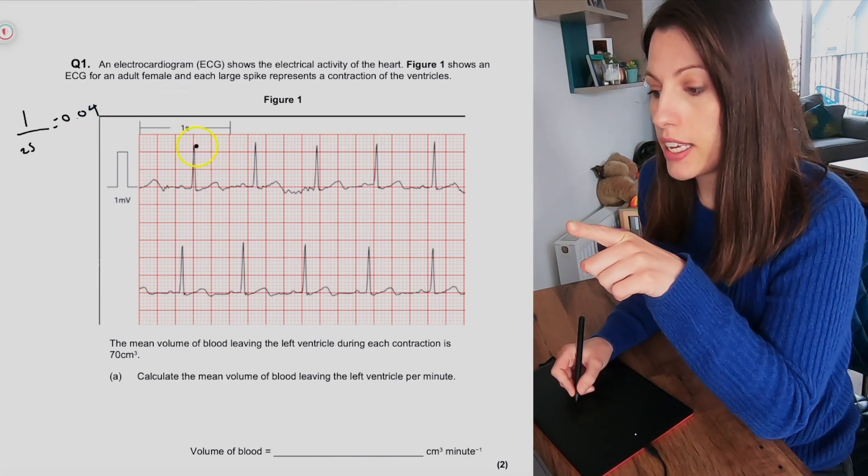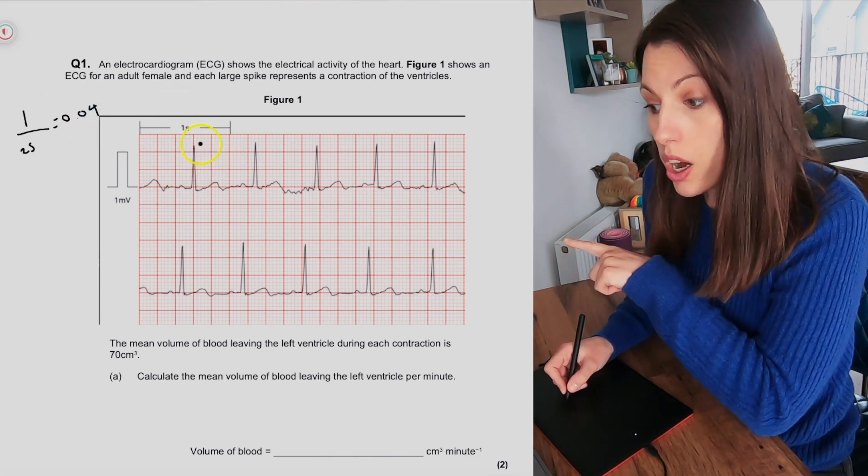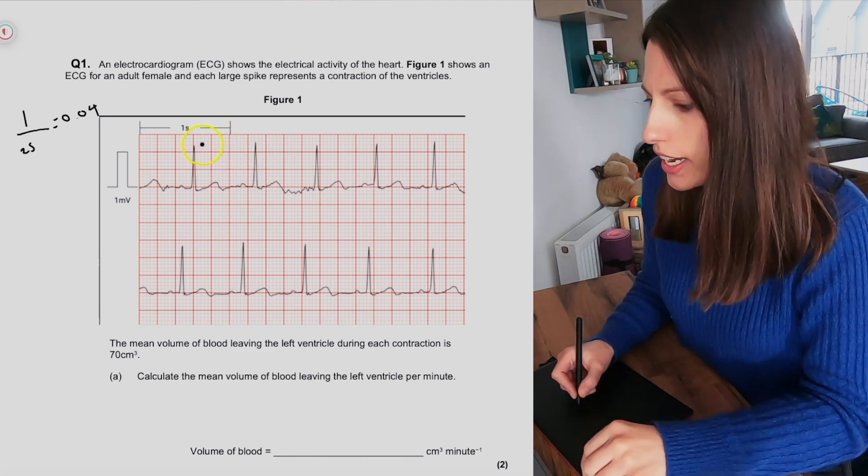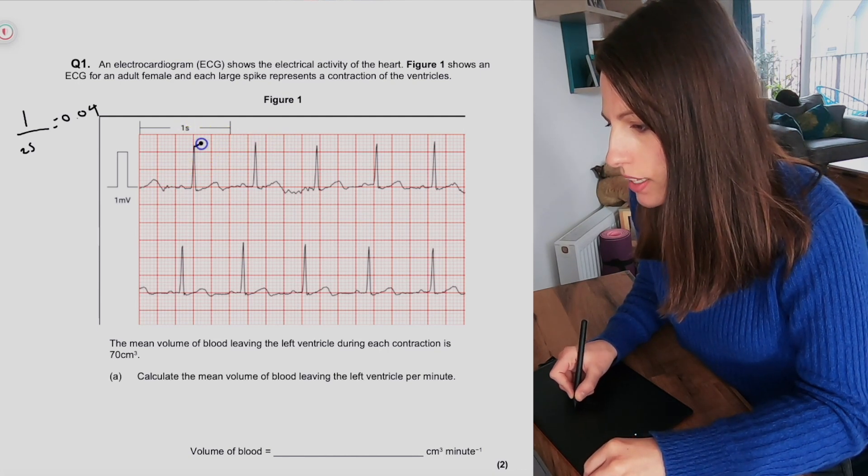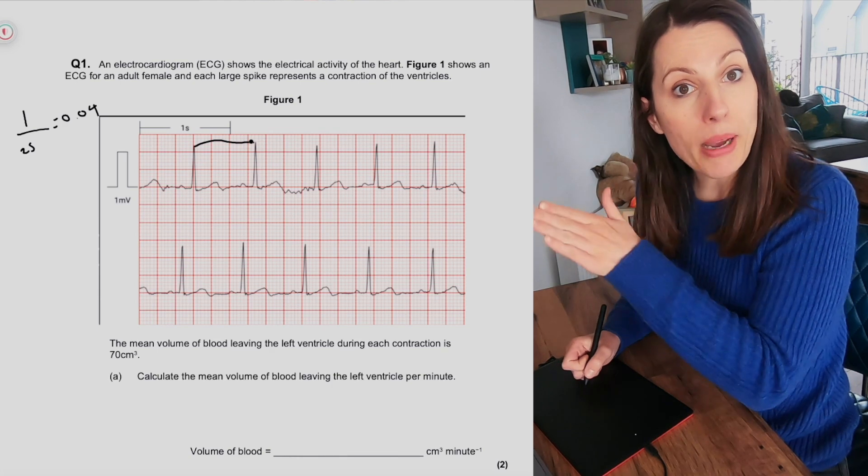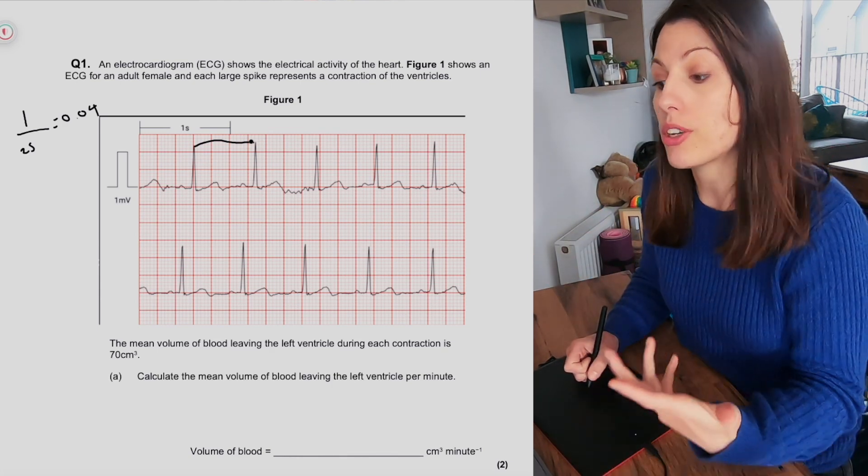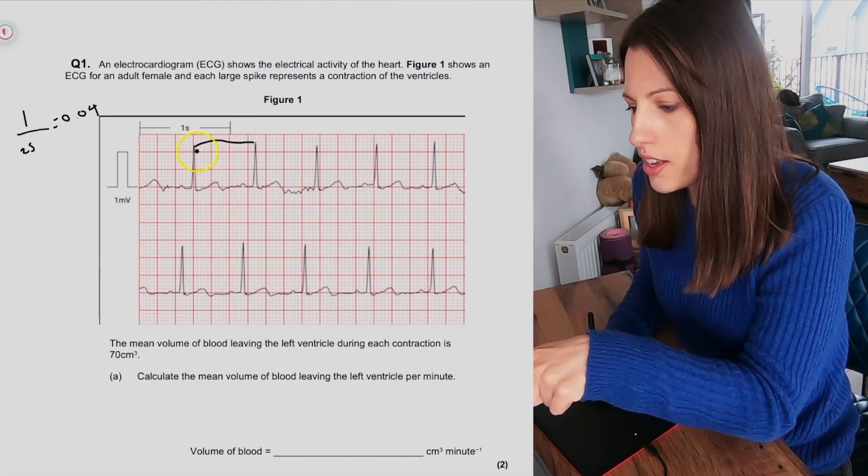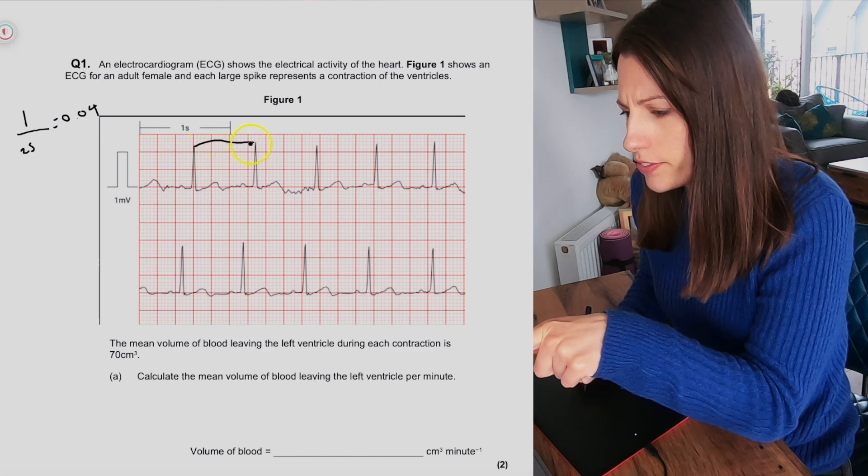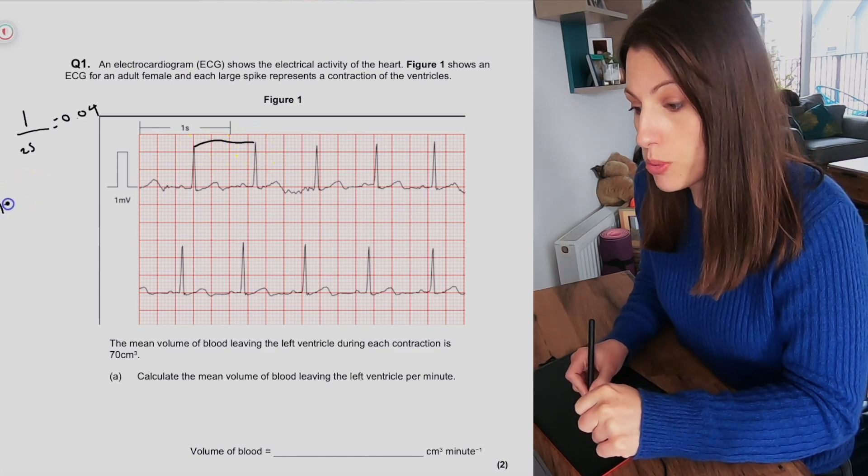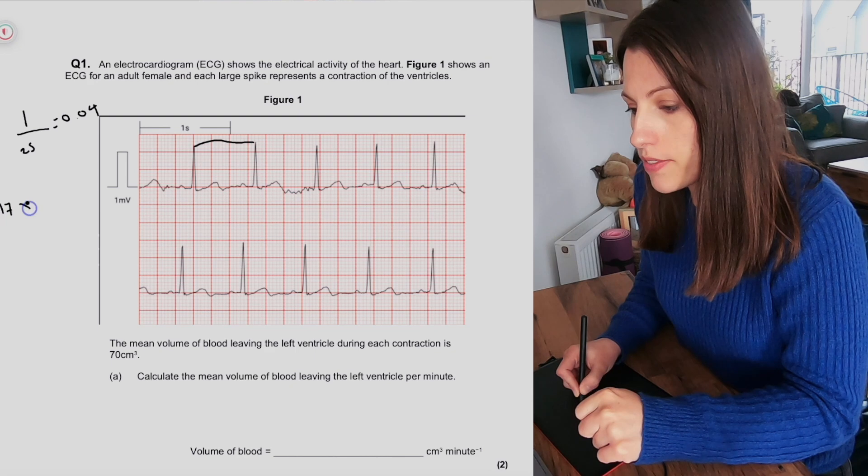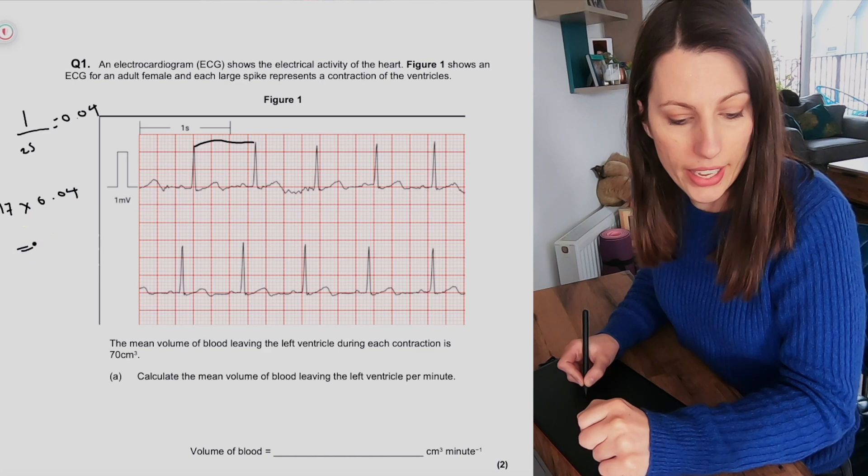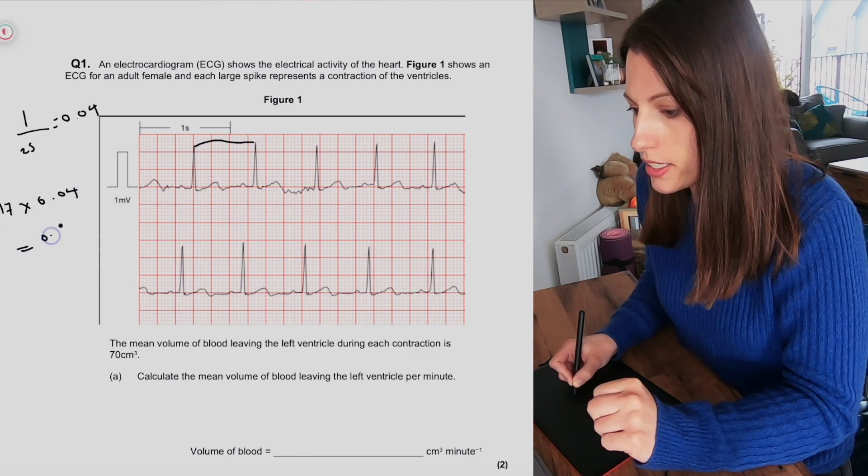Now to work out the time taken for one cardiac cycle on this particular ECG, which is my ECG at rest, we need to go from peak to peak. So we're looking at repeating patterns indicating a new cardiac cycle. So from peak to peak here we can see that it is 15, 16, 17 small squares. So 17 small squares, so 17 times 0.04, and that equals 0.68.